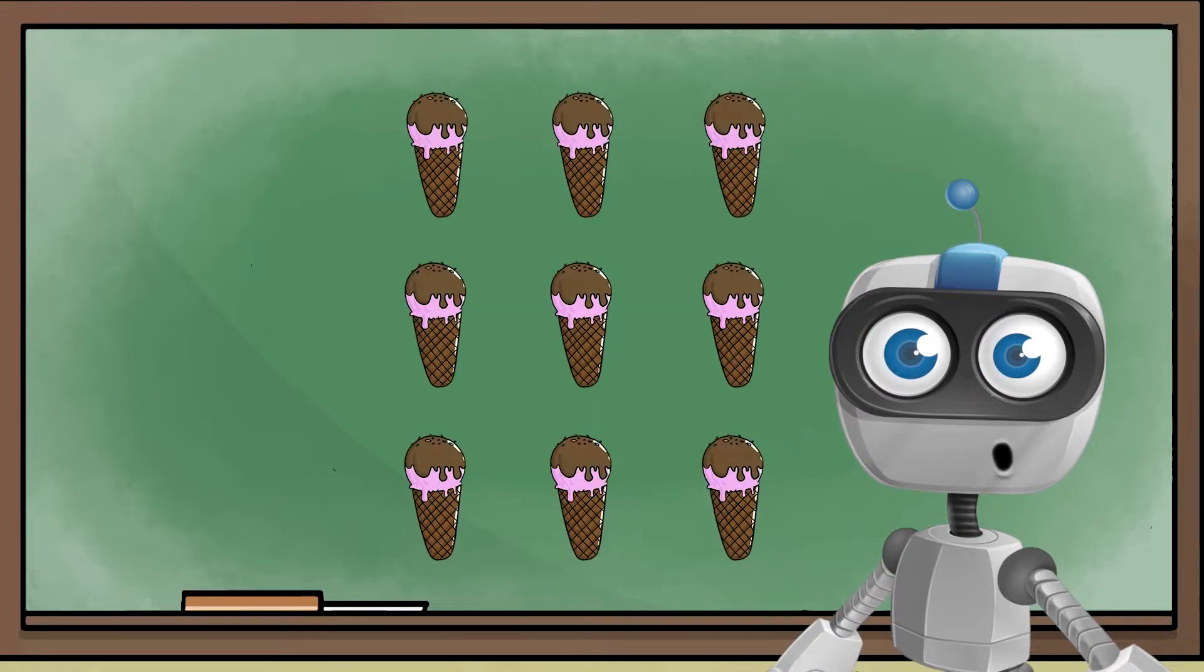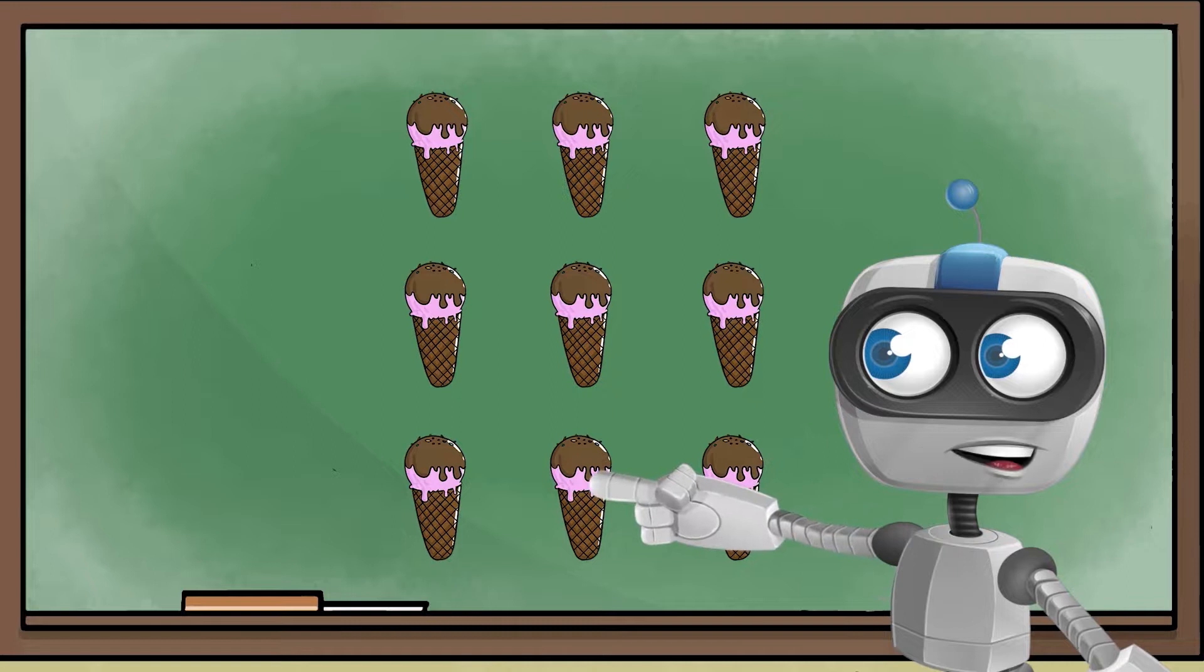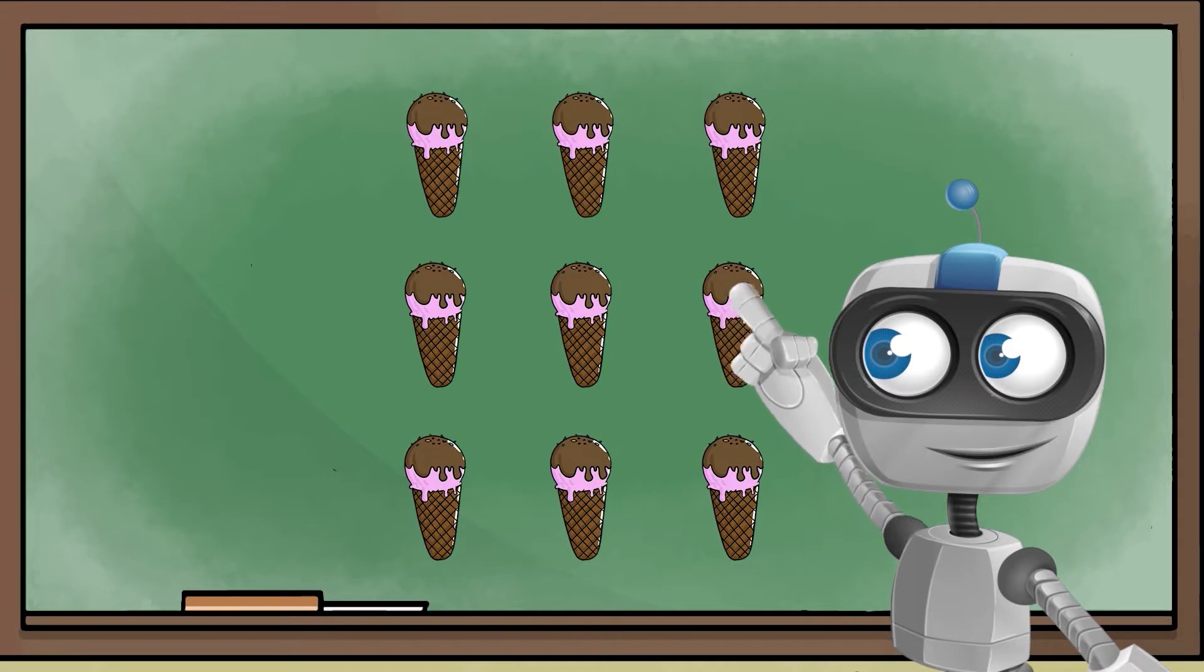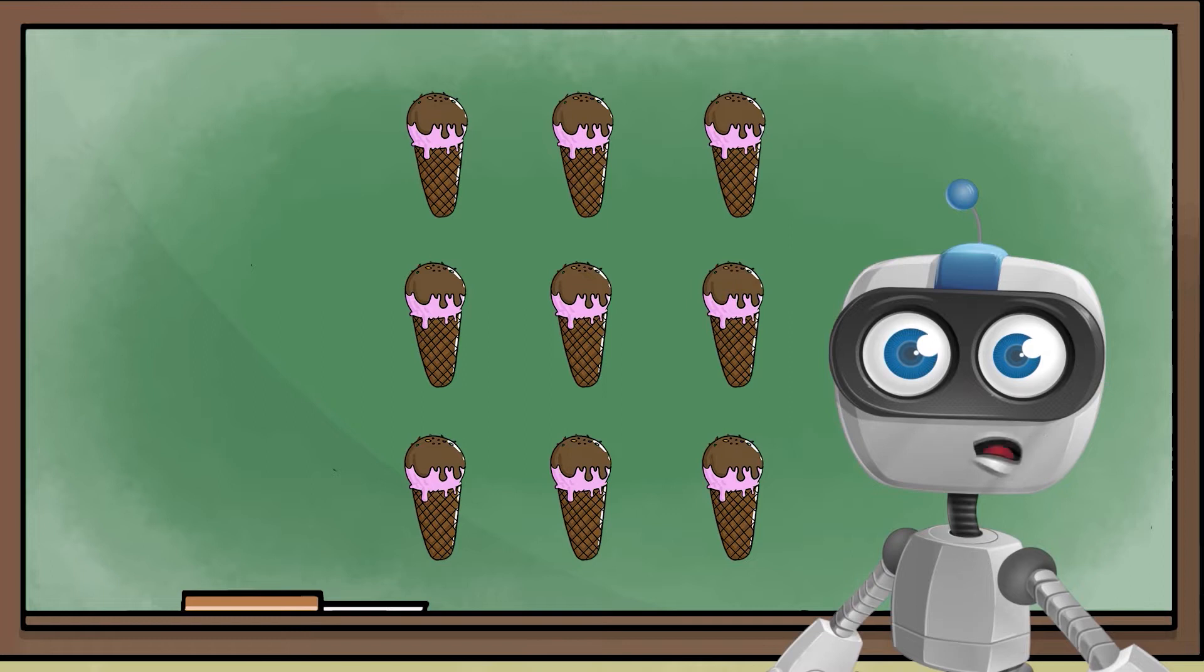How many ice cream cones are there? 1, 2, 3, 4, 5, 6, 7, 8, 9 ice cream cones. That's a lot of ice cream.